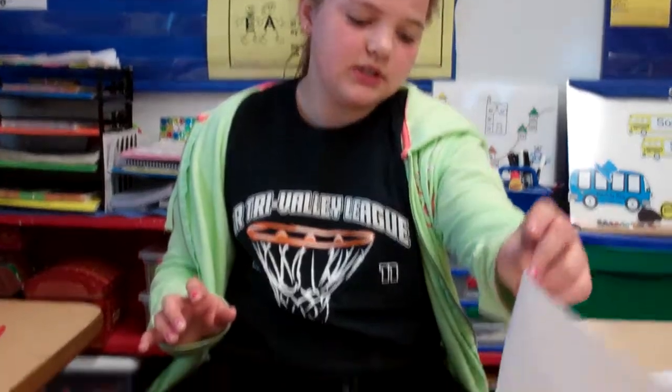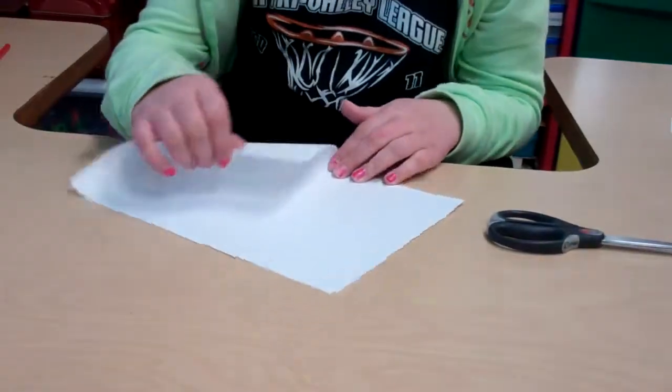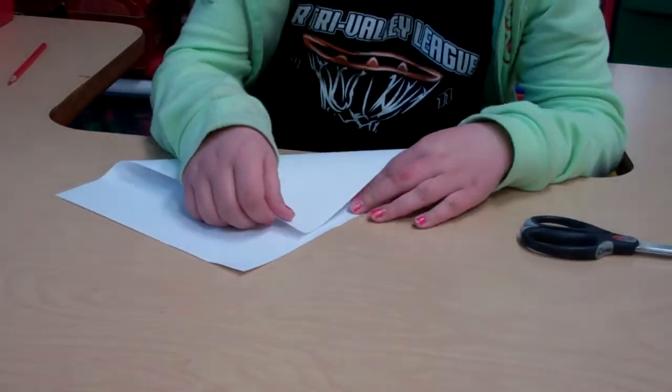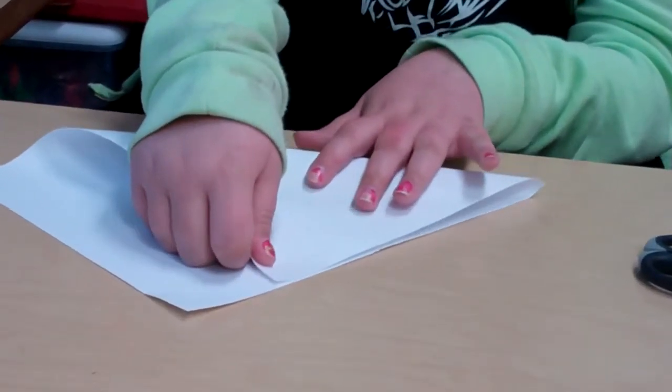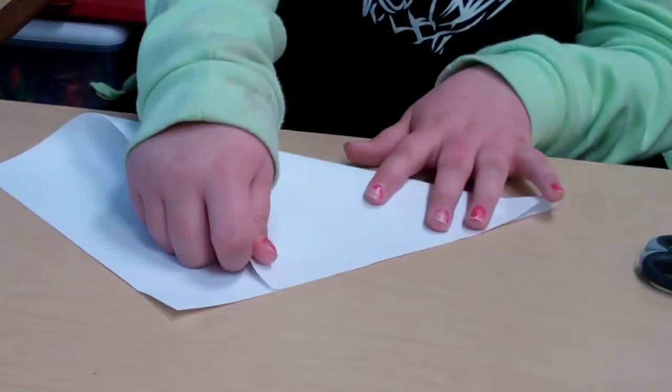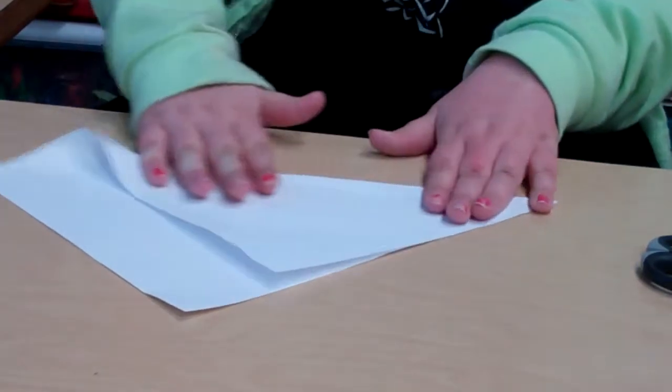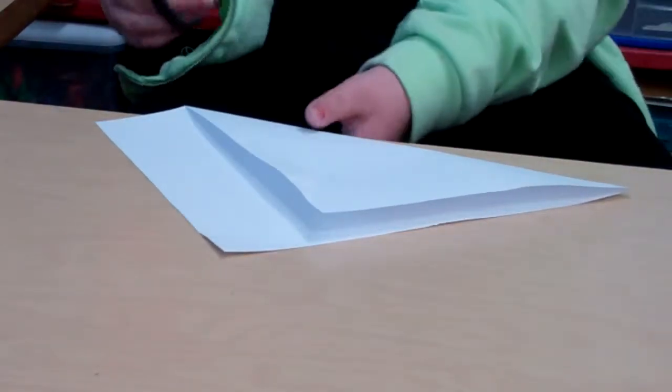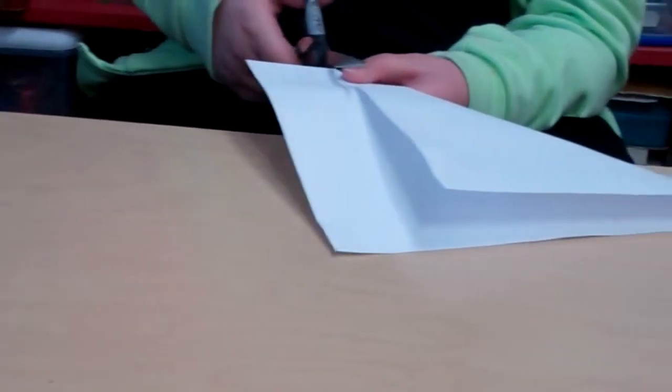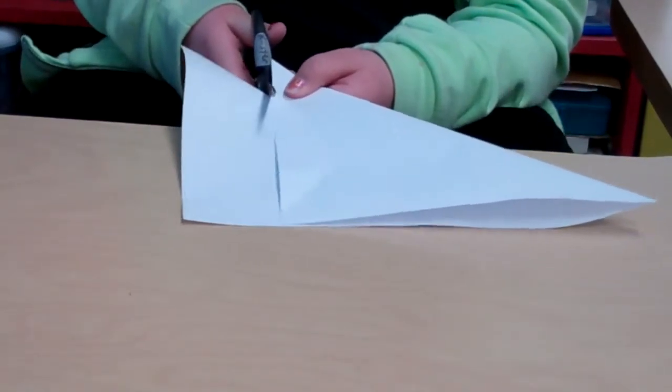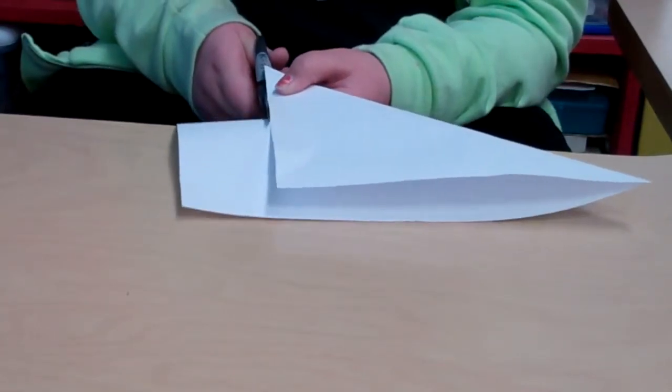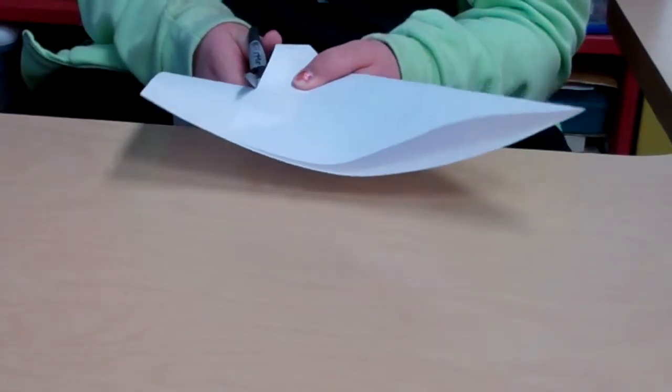First thing you will need to do is fold it into a triangle like this, and then there is going to be this strip on the bottom. And we want to make it as even and as straight as you can.